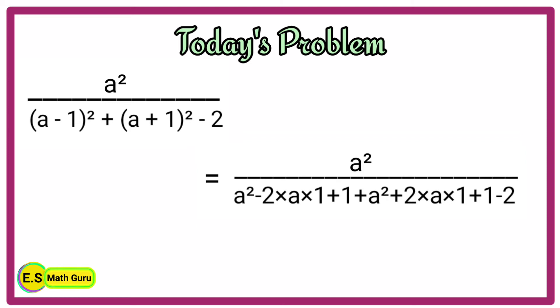Next, by multiplying the terms, we get a squared divided by a squared minus 2a plus 1 plus a squared plus 2a plus 1 minus 2.